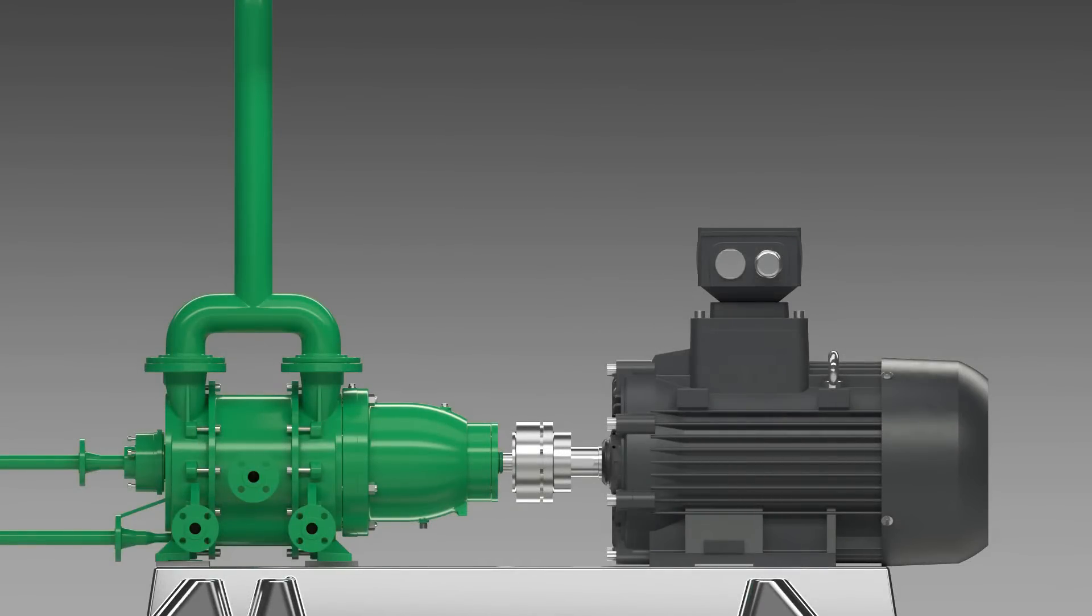Hermetic liquid ring vacuum pumps are manufactured in hermetically sealed or conventional designs depending on customer requirements. The hermetically sealed design with magnetic coupling drive or canned motor drive guarantees maintenance-free operation without leakage and is characterized by quiet and low vibration operation.